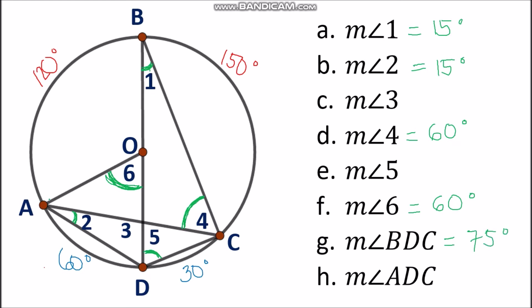Going back to arc AB, another angle that intercepts it is angle ADB. Angle ADB is an inscribed angle intercepting arc AB. By the inscribed angle theorem, the measurement of angle ADB is half of arc AB, which is 60 degrees. We will need this value later.